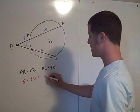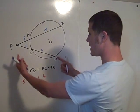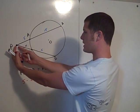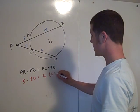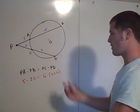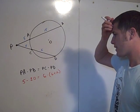PC is 6, and PD, well, PD, that's 6 plus X. So, this is times 6 plus X. So, this is the equation you have to solve to find X.